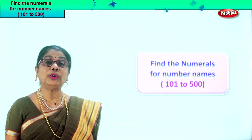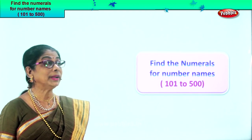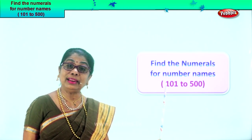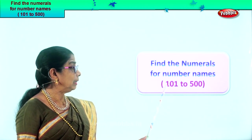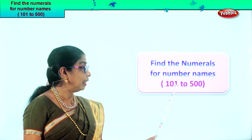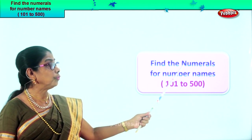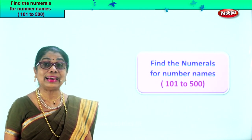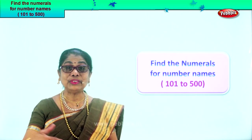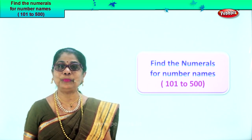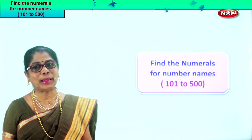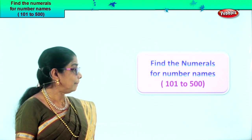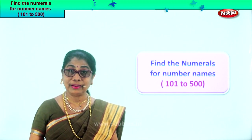Hi children, today we are going to learn to write the numerals. You must find the numeral for the number names. You already learned to write the names of the numbers. So you have number names, we have numerals 101 to 500. Now you are going to write the numeral — read the number name, fill in correctly with the correct numeral. It's a very interesting exercise. We have learnt the numbers, we have learnt the number name. Now let us do an exercise trying to remember the numerals for each of the number names. Alright, from 101 to 500. Let's do.